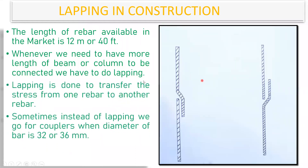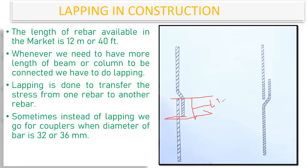Why is lapping done? Lapping is done to transfer the stress from one rebar to another rebar. Whatever force or stress is coming through one bar, it has to be transferred to the other bar, so that load is transferred from column to beam, from beam to footing, and ultimately to the ground. So lap length is the length you maintain at the overlap region from where you start the lap to where it ends.